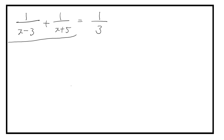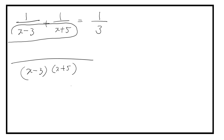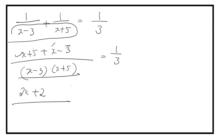Now let us solve it. Taking LCM of the LHS, we get X minus 3 into X plus 5 in the denominator. In the numerator, 2X plus 5 minus 3 gives plus 2. Multiplying using the X plus A into X plus B formula, A plus B is plus 2, and A into B is minus 15. So the equation becomes: (2X + 2) / (X² + 2X − 15) = 1/3.